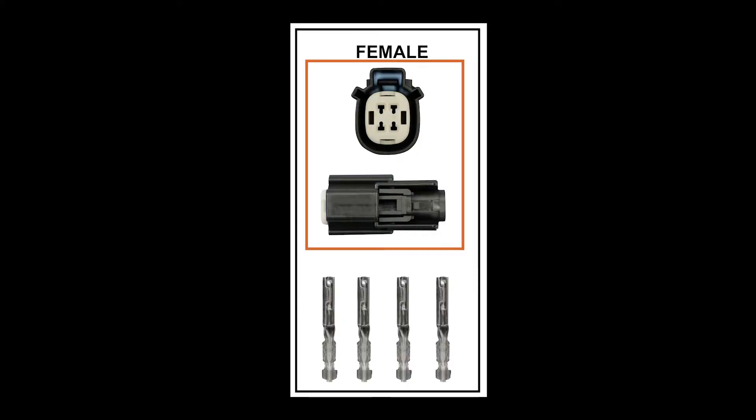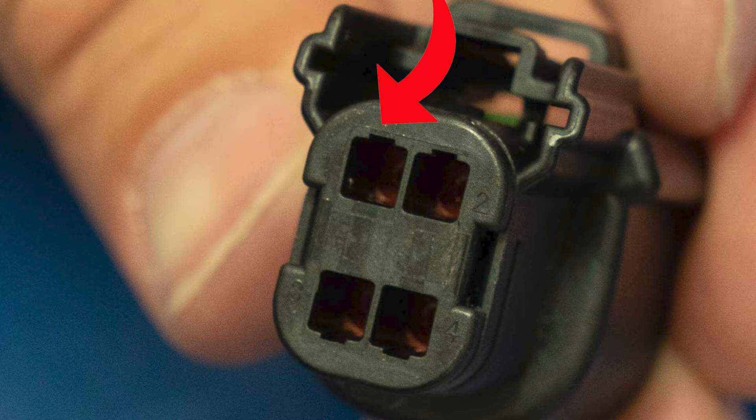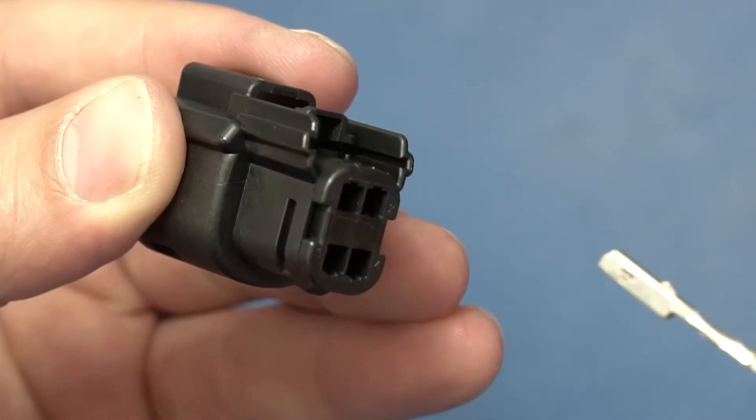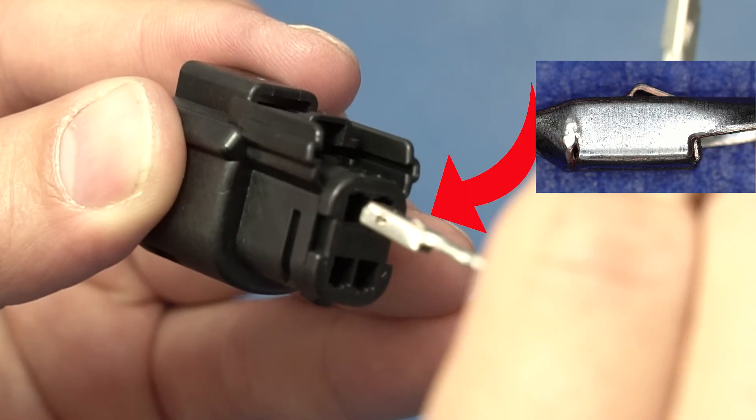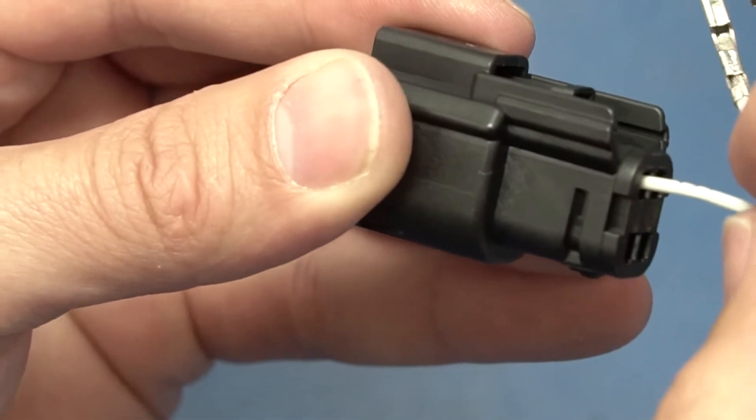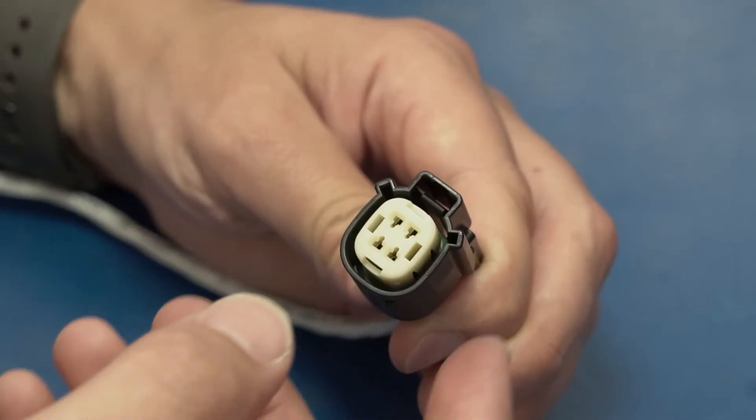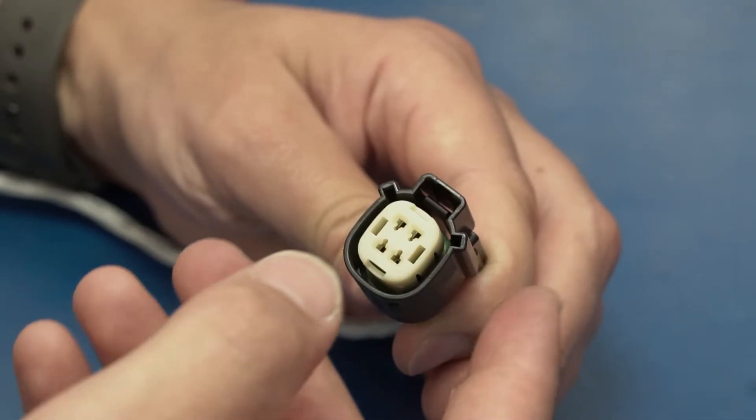Next grab the female four position connector. Note the slots are outward facing. Place the first socket into position, noting the tab is outward and you should hear a clicking sound. Repeat the process for all four wires. Use your thumb to press down on the top face and it will snap into position.